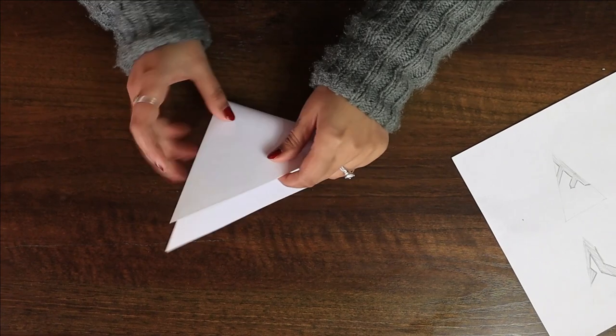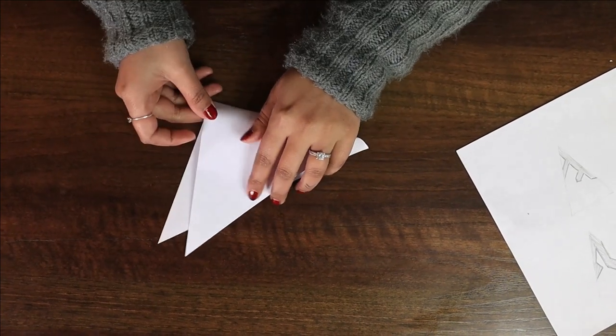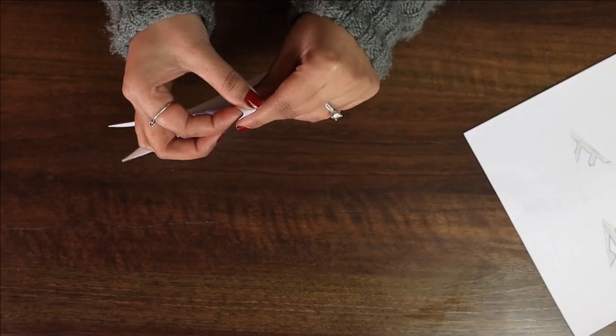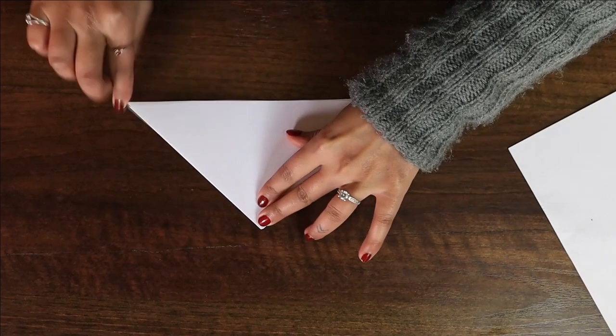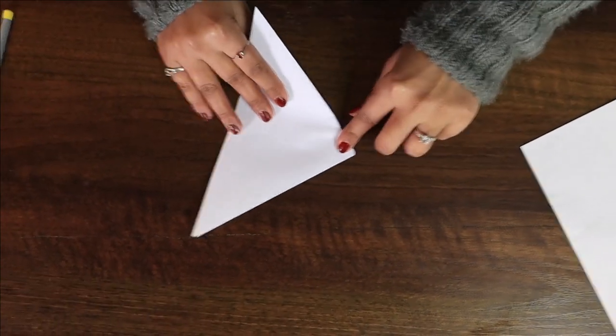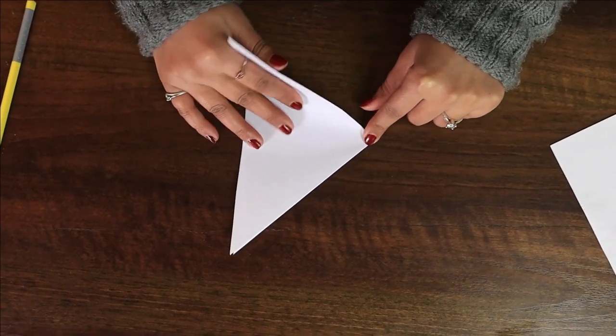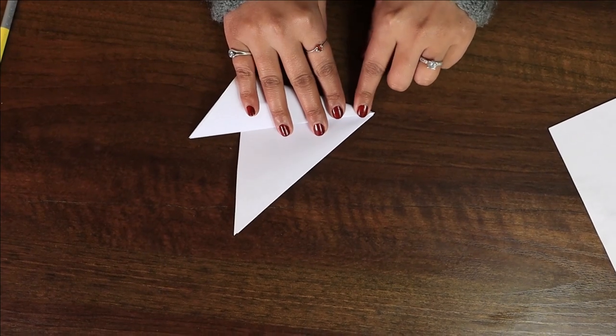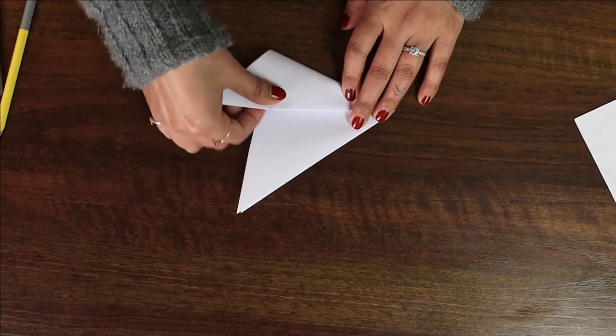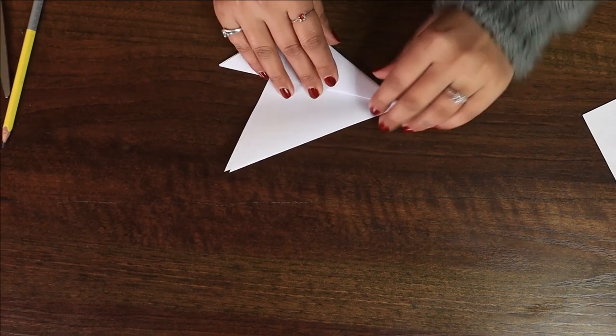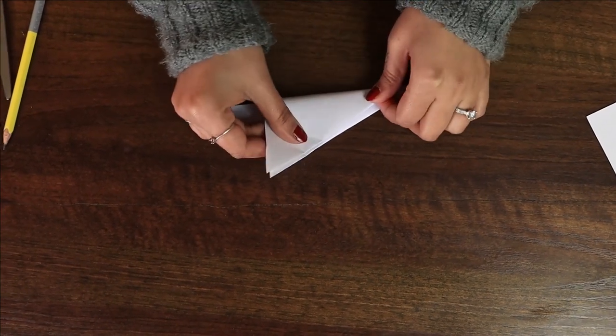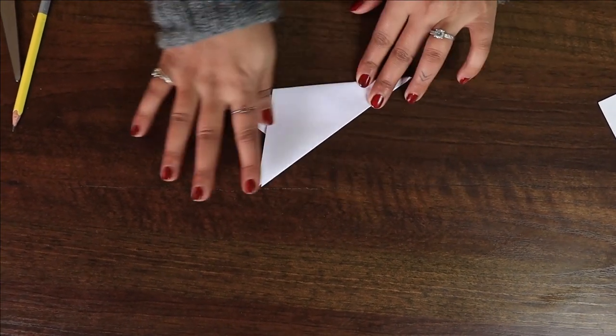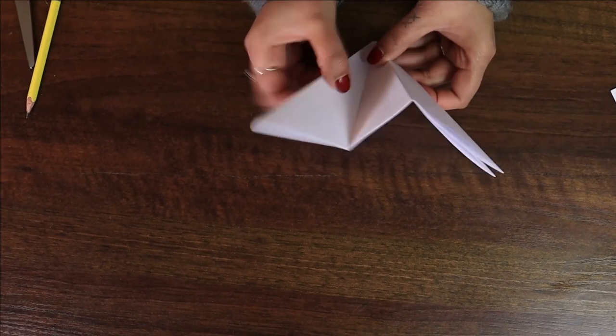Now we will fold it one more time. The next step is to make two triangles out of this. So we are going to fold it to two thirds like this. Flip it over and fold the other edge like this so that you have one triangle with three edges.